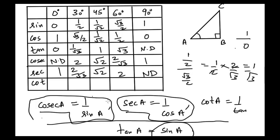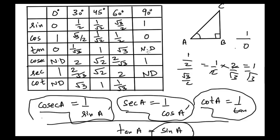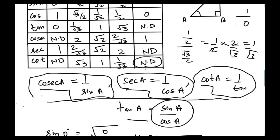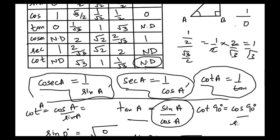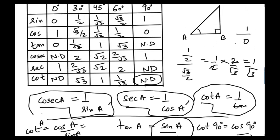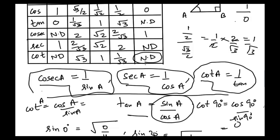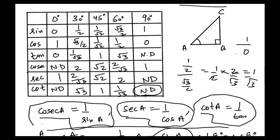Cotangent is the reciprocal of tangent: cot 0° is not defined, cot 30° = √3, cot 45° = 1, cot 60° = 1/√3. For cot 90°, rather than taking the reciprocal of tan 90° (which is undefined), we use cot = cos/sin: cos 90°/sin 90° = 0/1 = 0. So cot 90° = 0.